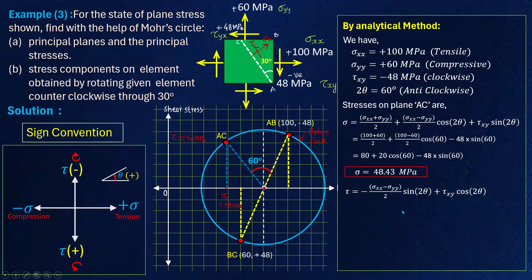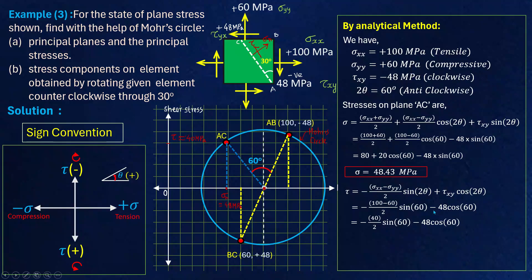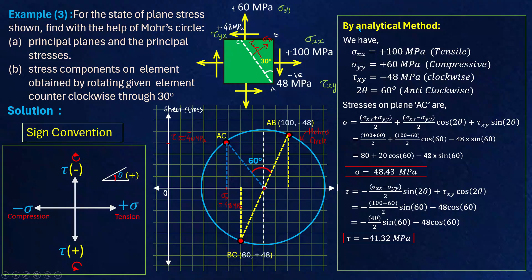For shear stress, substituting into the shear stress formula: (100−60)/2 · sin(2θ) − tau_xy · cos(2θ) = 40/2 · sin60 − (−48)·cos60, giving minus 43.32 MPa. From the graph we obtained approximately 40 MPa, which matches closely. We have now found both normal and shear stress using Mohr circle and the analytical method.